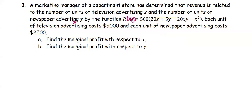For example, a marketing manager of a department store has determined that revenue is related to the number of units of television advertising x and the number of units of newspaper advertising y by the function r(x,y) = 500 times (20x + 5y + 20xy − x²). Each unit of television advertising costs $5,000 and each unit of newspaper advertising costs $2,500.